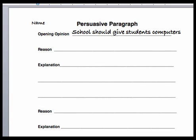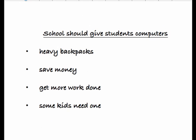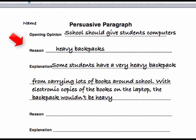Take a piece of the persuasive paragraph worksheets, write your name and the position you have chosen at the top. Look at your list of reasons and find one you know you can explain. Write it down in the first reason section. On the lines below, write your explanation for this reason. Your goal is to make the reason more clear by putting it into different words — if you use the same words, you are not explaining, you are restating.